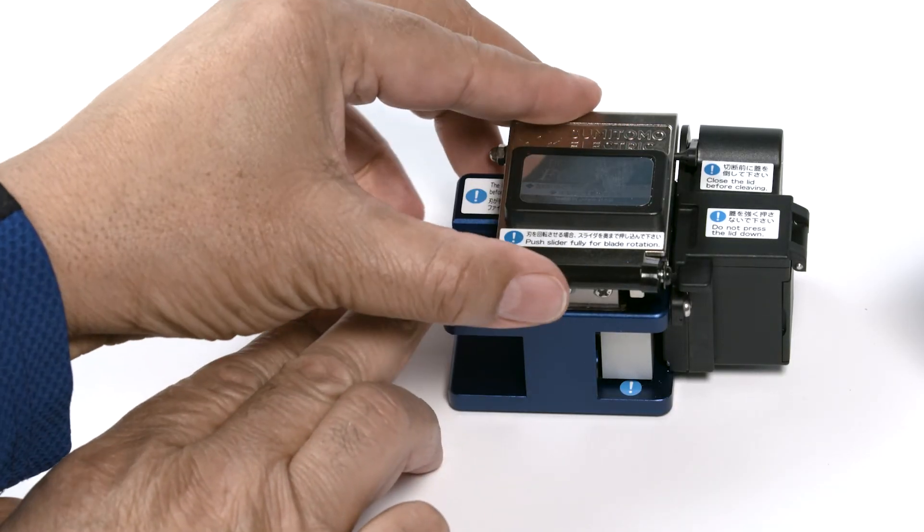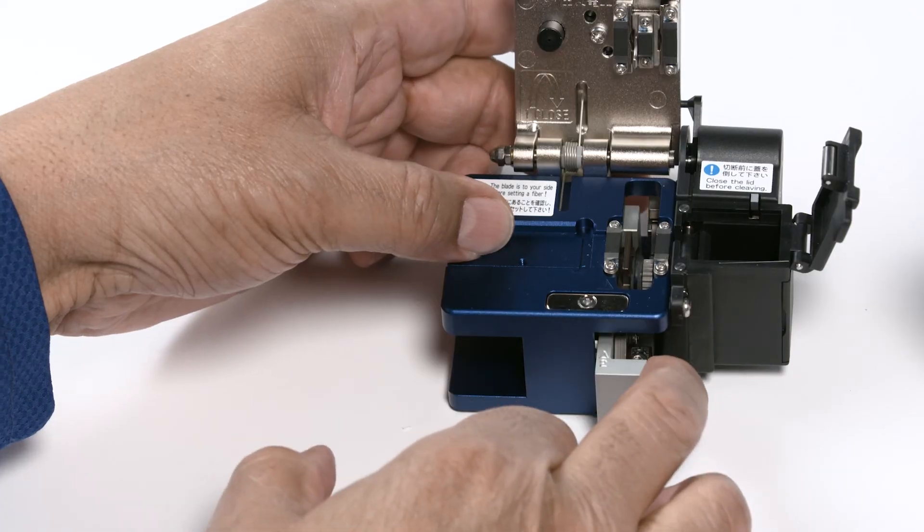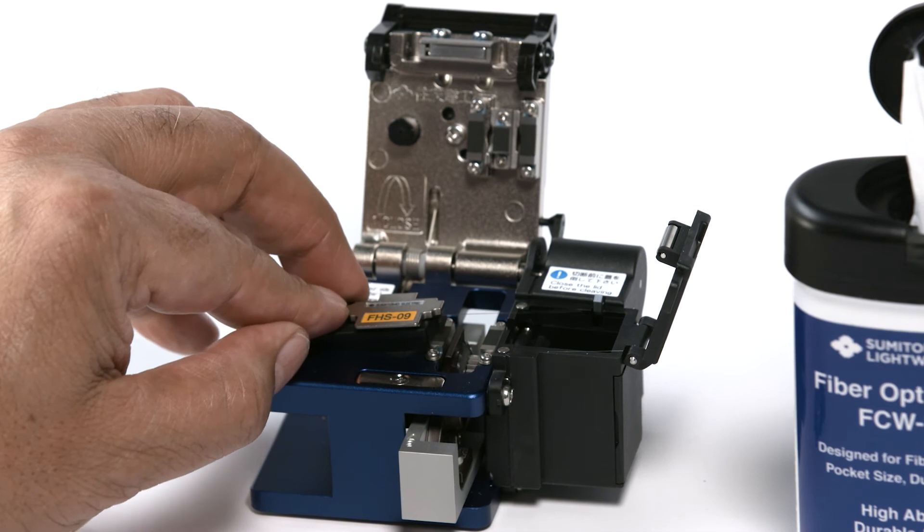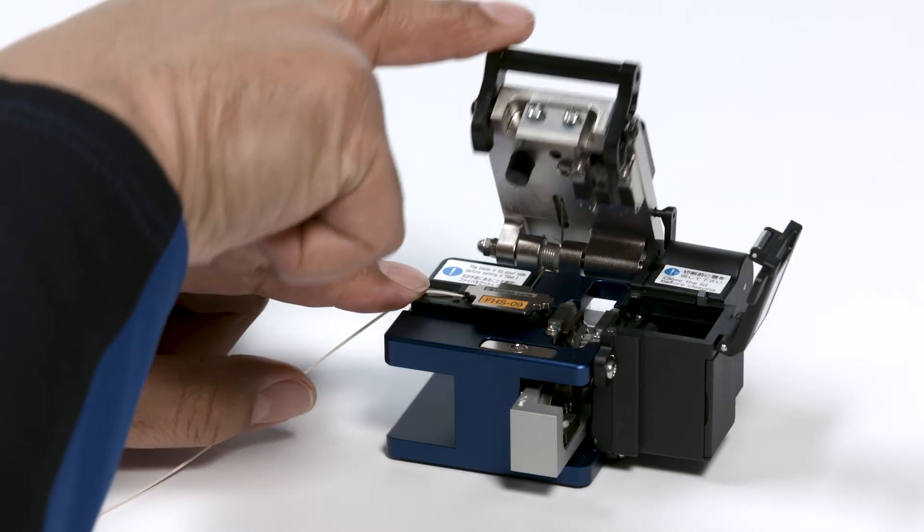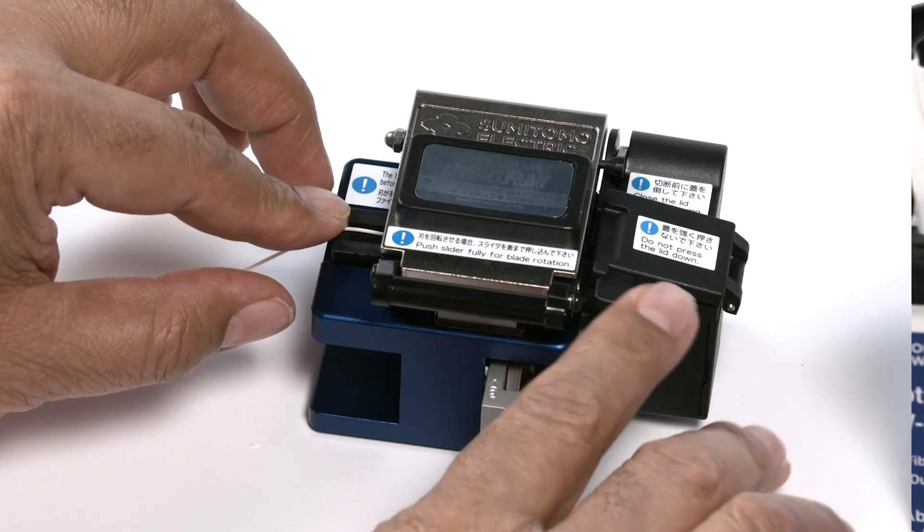Set the cleaver for cleaving. Open the main lid and the shard collector lid and set the scoring blade. Place and align the fiber holder into the cleaver. The exposed glass cladding will rest on the lower cleaver rubber pads. Close the cleaver's main lid. Close the shard collector lid gently onto the fiber cladding. Push the blade carriage inward fully.